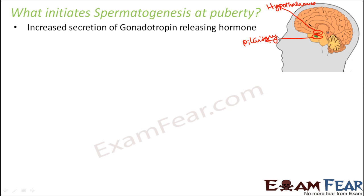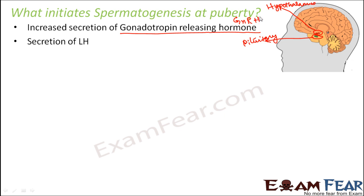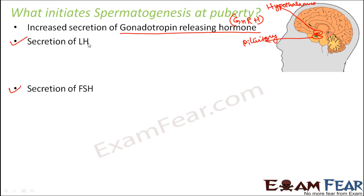At puberty, the secretion of gonadotropin releasing hormone from the hypothalamus increases. This hormone, often known as GnRH, when secreted from the hypothalamus, stimulates the pituitary to secrete LH and FSH.